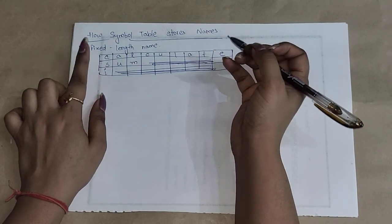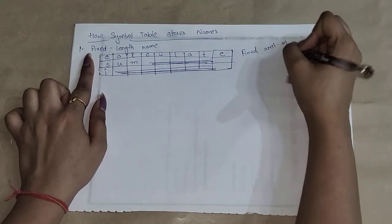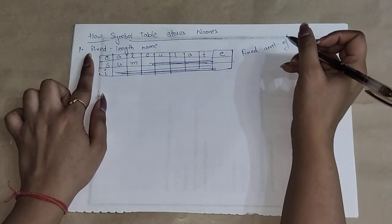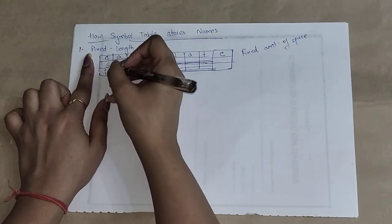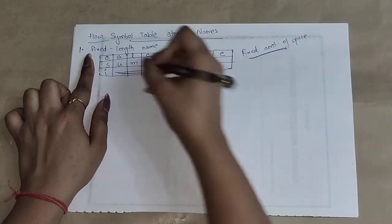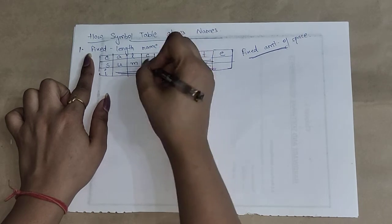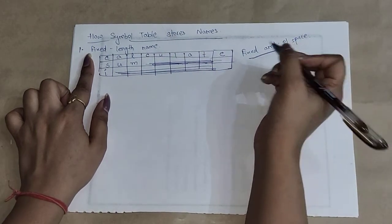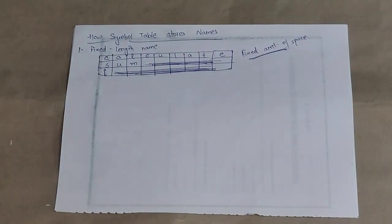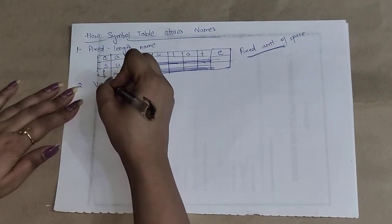So the drawback of fixed length name is that there is a wastage of memory space because there is a fixed amount of space to store the names of data objects. For example, if we store 'calculate', 'sum', and 'i', then 'calculate' occupies the full fixed space, but 'sum' only needs three cells and 'i' needs one — so the rest of the cells are wasted. There is a huge amount of wastage of memory.